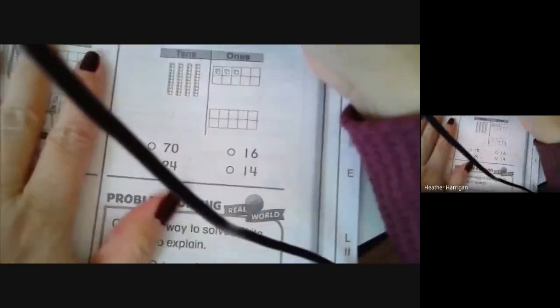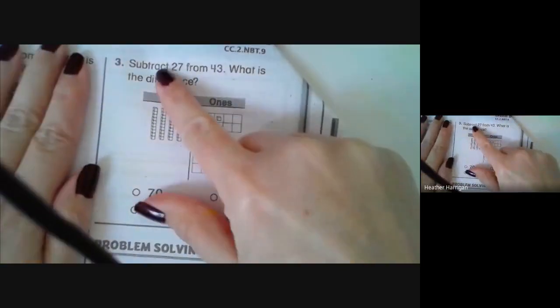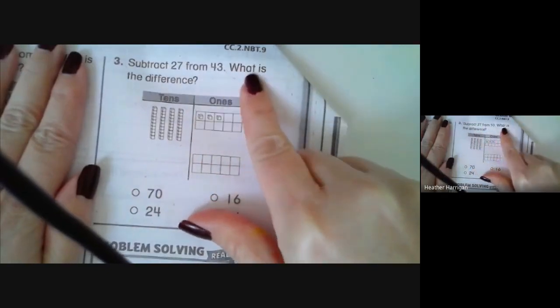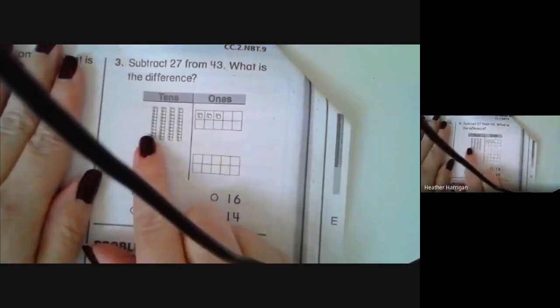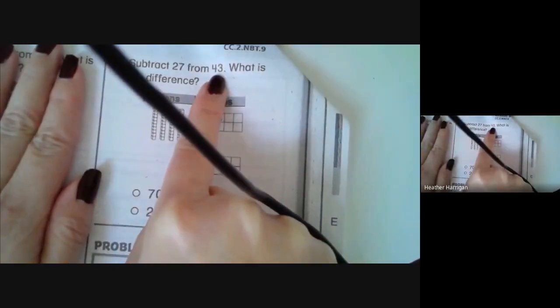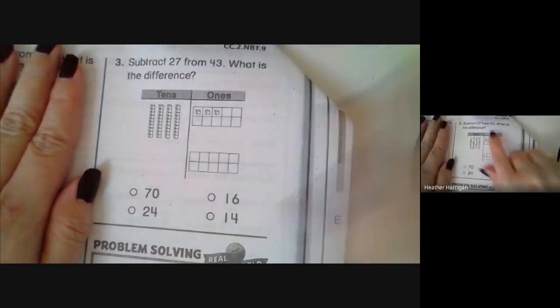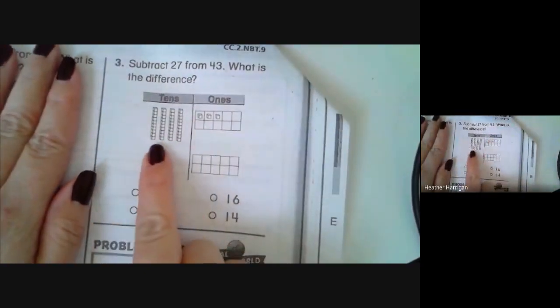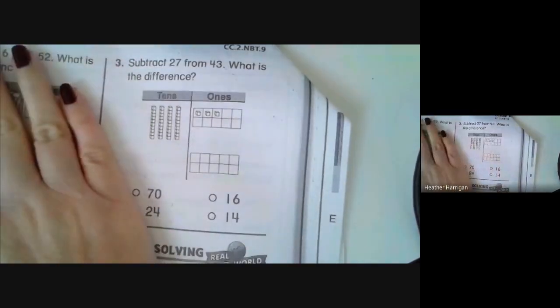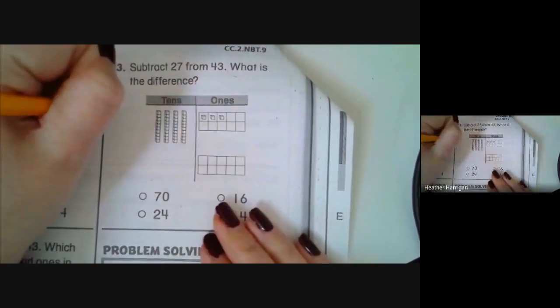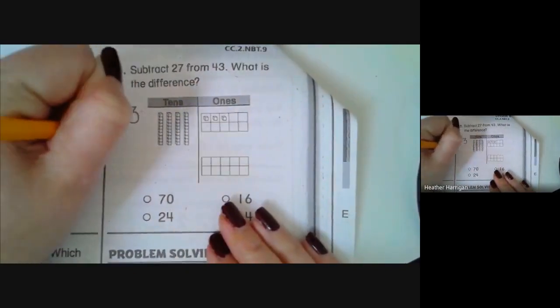So if we look at our next strategy, this would be using our quick picture again. So in this particular one, if we were to subtract 27 from 43 and we wanted to find the difference, what we would do is we would model the number that is greater, which is 43. We would model it with four tens and three ones. A lot of times I'll rewrite the subtraction problem so the child can see it visually. I would write 43 minus 27. And then I tell them that the top number, the number that is greater, is the number that we model. So that would be four tens and three ones.